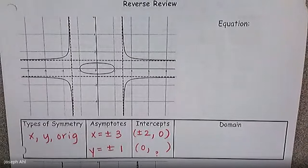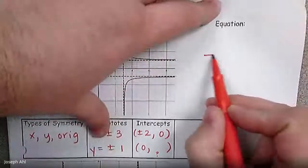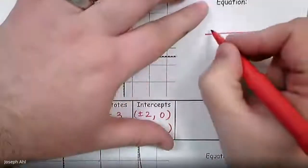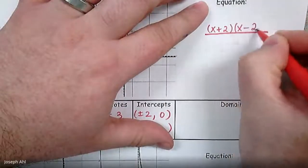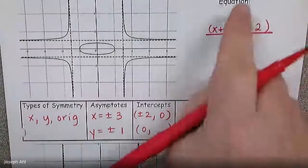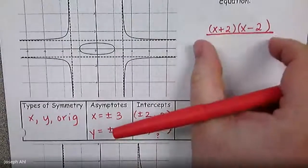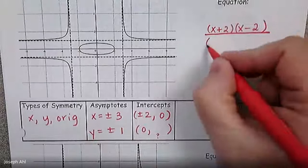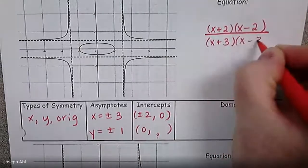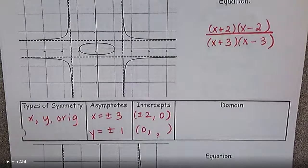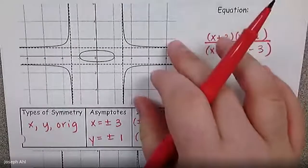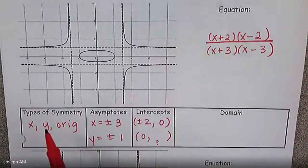So how do we write the equation? If we think about the fraction that makes up these graphs, we know that the numerator comes from wherever the x-intercepts are located. So that's going to be x plus 2 times x minus 2 — those factors produce roots at plus or minus 2. The denominator determines where the vertical asymptotes are, so that's going to be x plus 3 times x minus 3. Now, what am I going to set it equal to such that we would have x, y, and origin symmetry?